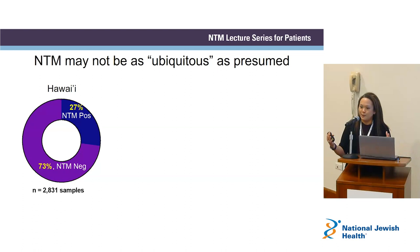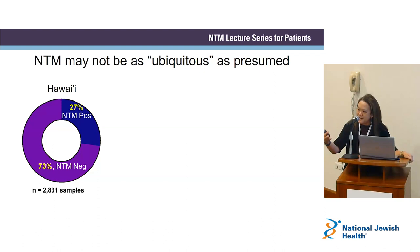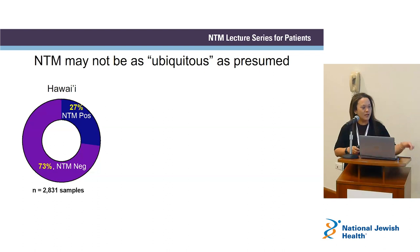It was a large citizen science project. I was here at National Jewish — how was I going to do a large environmental study in Hawaii? So we got high school and undergraduate volunteers to sample the natural and household environments in Hawaii to find out where these organisms are, how prevalent they are, and which NTM species are present in those hotspot areas.